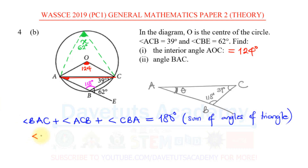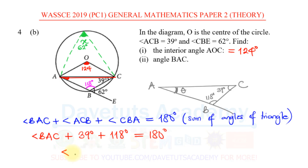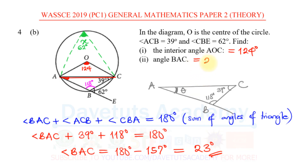Plugging in the known values: angle BAC + 39° + 118° = 180°. So angle BAC = 180° − (39° + 118°) = 180° − 157° = 23°. Therefore, angle BAC is 23°.